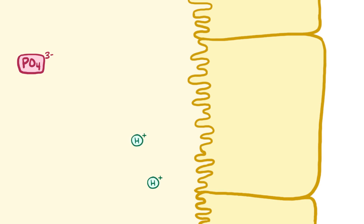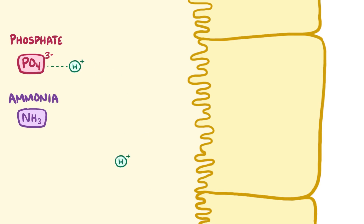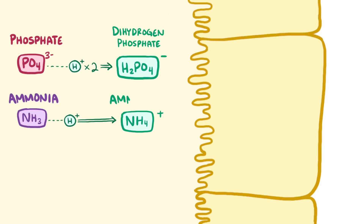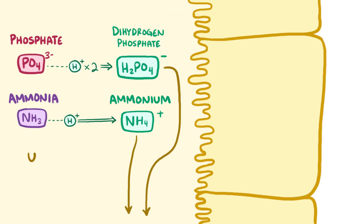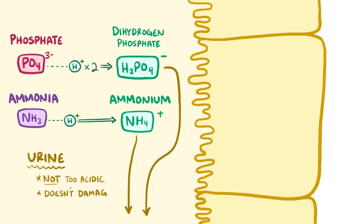Once in the lumen, hydrogen binds to phosphate or ammonia to form relatively weak acids like dihydrogen phosphate or ammonium, which then get peed out in the urine. This allows protons to get removed without making the urine too acidic and damaging the cells lining the tubules and the rest of the urinary tract.